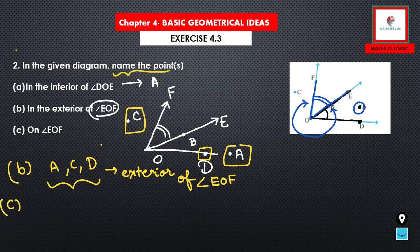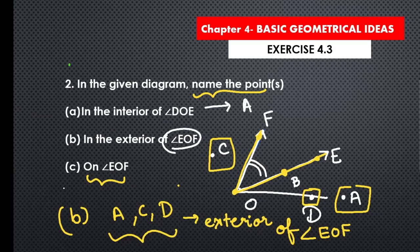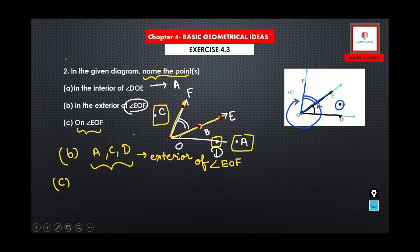C and D are the exterior points of angle EOF. Now we need to find one point on angle EOF. The points on angle EOF are F, O, B, and E — so these are 4 points on angle EOF.